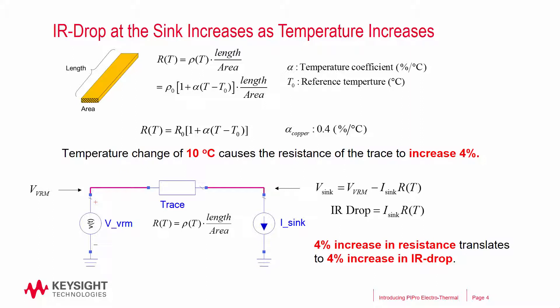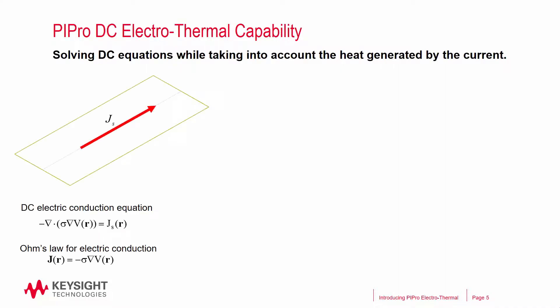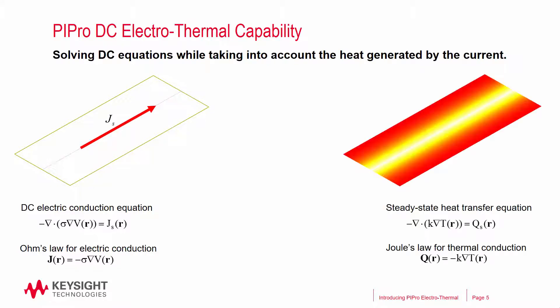We will now discuss the how. To start the analysis, the PI Pro Electro Thermal Simulator first solves for the DC equations. When the DC solution is ready, it is passed on to the thermal solver. After the thermal computation is done, the DC solver will recalculate the DC solution with the new thermal information, and the process will repeat until there is convergence.